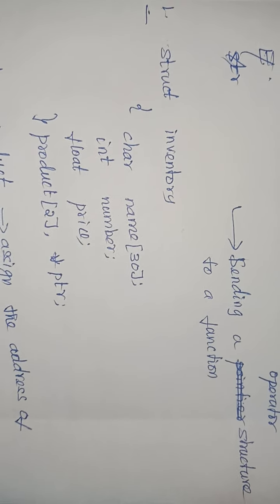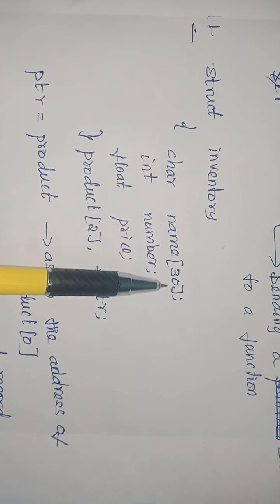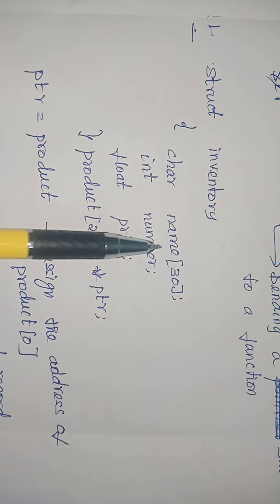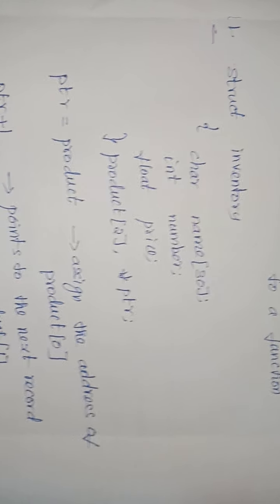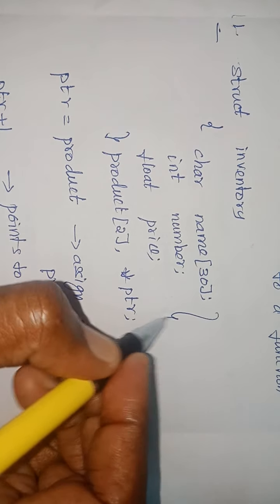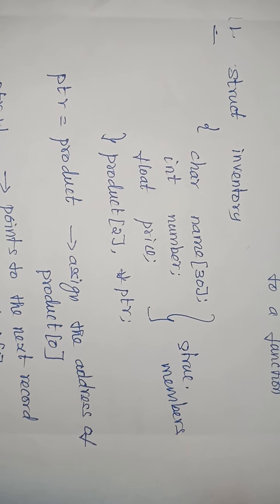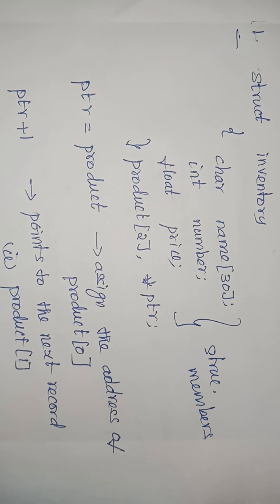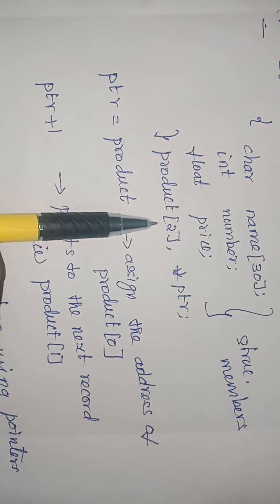Consider this example - a structure called inventory. It contains name, number, and price: name of item, number of items available, and price of a single item. These are the structure members. I want to access them using the structure variable product and the pointer variable PTR. The structure variable product is an array containing two elements.